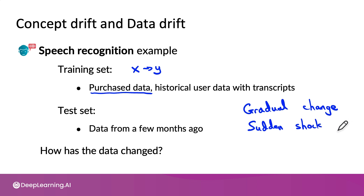For example, when COVID-19 hit, a lot of credit card fraud systems started to not work, because the purchase patterns of individuals suddenly changed. Many people that did relatively little online shopping suddenly started to use much more online shopping, so the way people were using credit cards changed very suddenly. This actually tripped up a lot of anti-fraud systems, and many machine learning teams were scrambling to collect new data and retrain systems to adapt to this very new data distribution.